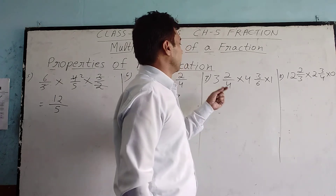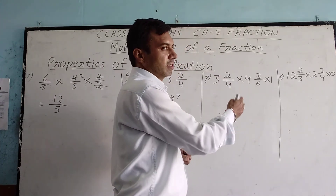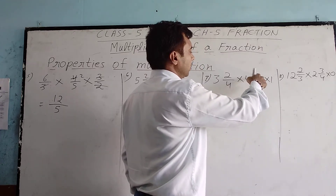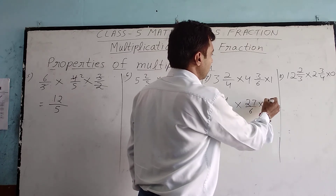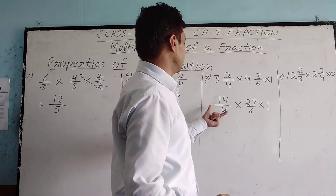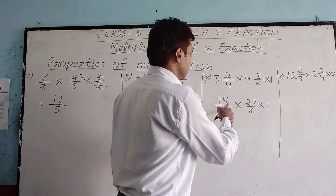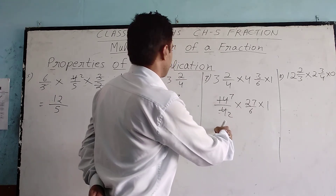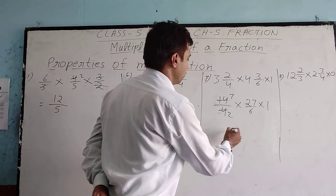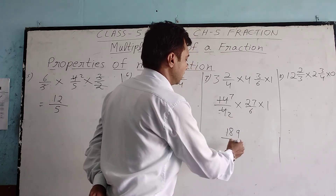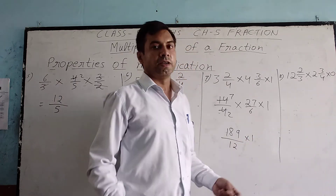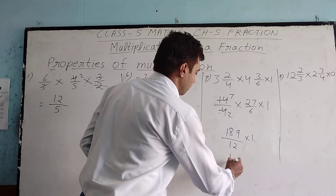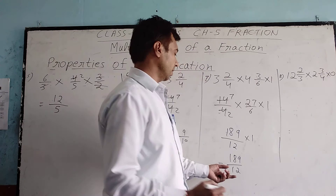For the next question with mixed fractions, we convert each mixed fraction to an improper fraction. 4 multiplied by 3 is 12, plus 2 gives 14 by 4. Then 6 multiplied by 4 is 24, plus 3 gives 27 by 6, multiplied by 1. We check if we can cut: 2 goes into 4, giving 14 and 2. We cannot reduce 27 and 14 further, so we multiply: 7 by 7 by 49, and 7 by 14 gives some values, and 2 by 6 gives 12. Since any fraction multiplied by 1 gives the fraction itself, our result is 189 by 12.